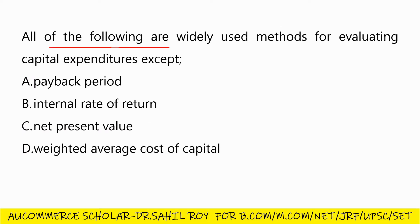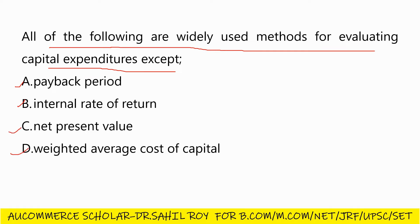Our next question: all of the following are widely used methods for evaluating capital expenditures except — payback period, internal rate of return, net present value, or weighted average cost of capital. The correct answer is Option D: weighted average cost of capital.